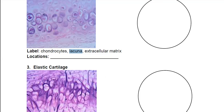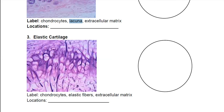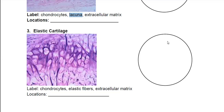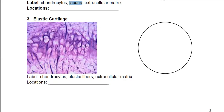Next is elastic cartilage. Again we have chondrocytes — these are the cells that are making it. Then we have elastic fibers, which are the dark purple lines you don't see in the hyaline cartilage. The extracellular matrix is everything else around that. The hyaline and elastic cartilage look very similar — hyaline tends to be a slightly lighter color purple, while elastic cartilage is a little bit darker, has the dark elastic fibers, and tends to have a few more cells more densely packed together.